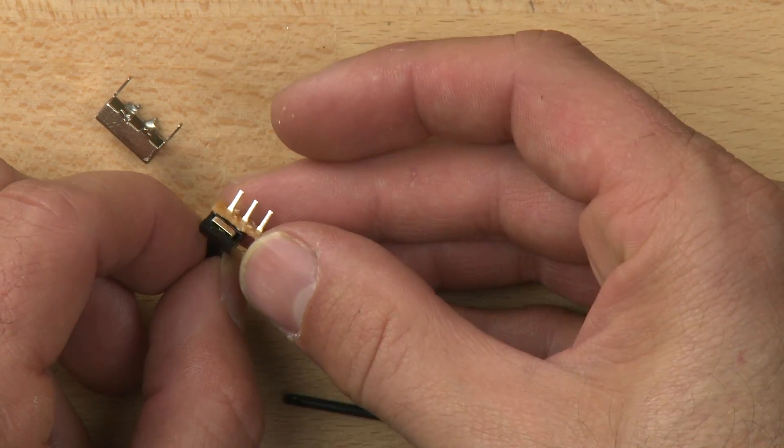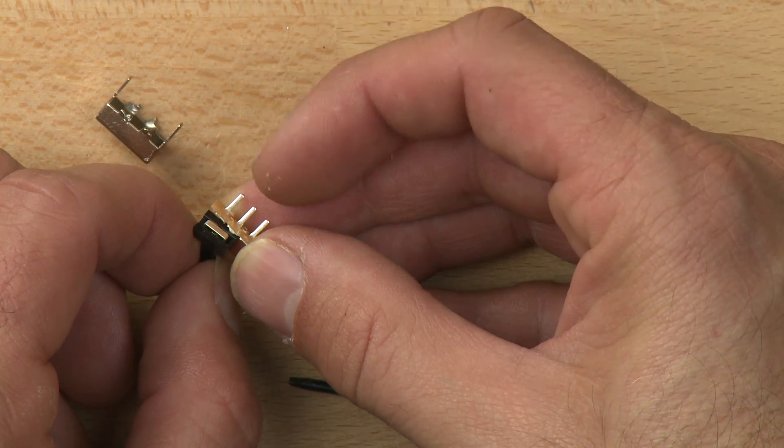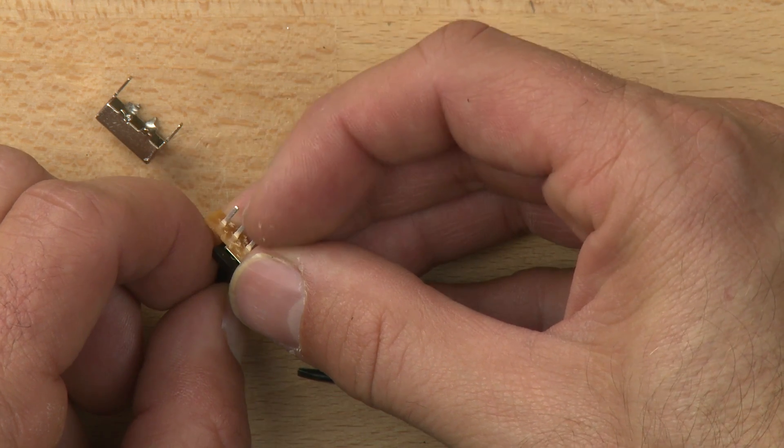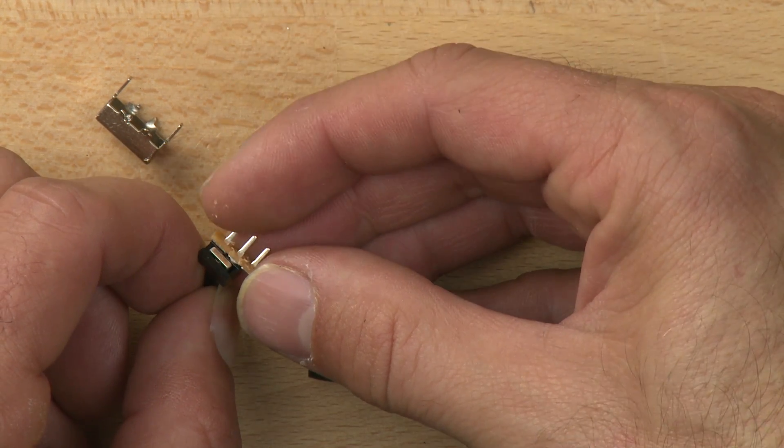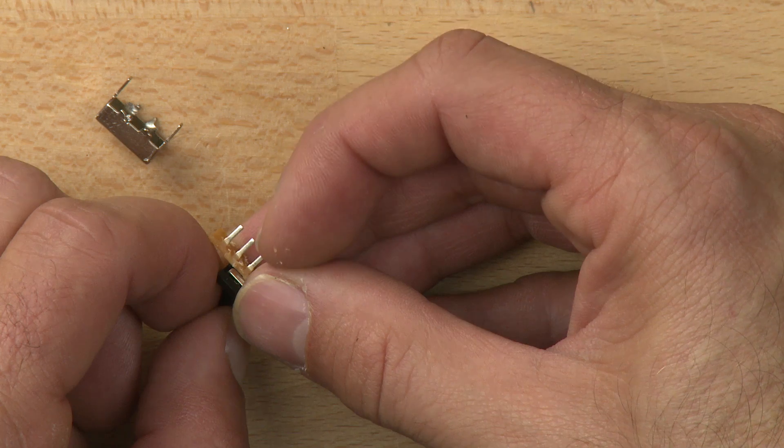So when it's in this position, these two are connected. And when it's in this position, these two are connected. So the power flows between this circuit when it's in this position and this circuit when it's in this position.